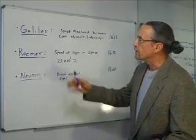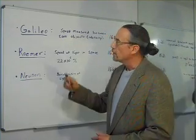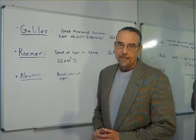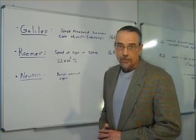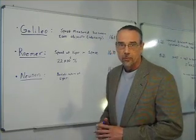Our first three individuals are Galileo, Ole Rømer, and Newton. What we want to remember that Galileo contributed to this is that he said that speed or rate is measured between two objects. And we all know this.